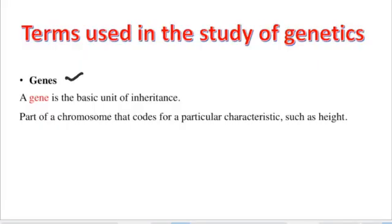A gene is a basic unit of inheritance. A gene is a part of a chromosome that codes for a particular characteristic such as height, eye color, or skin color.